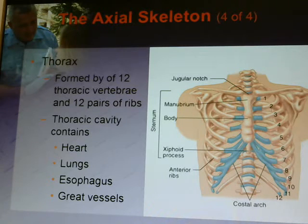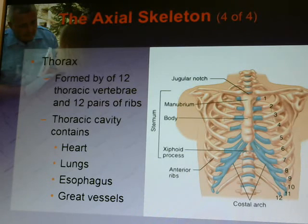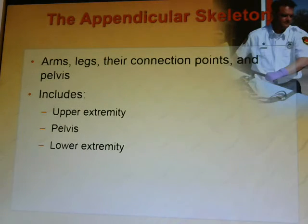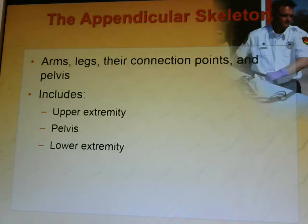The thoracic cavity contains your heart, lungs, esophagus, and other great vessels. The appendicular skeletal system includes your arms, legs, and their connecting parts in the pelvis — both upper extremities, the pelvis, and the lower extremities.